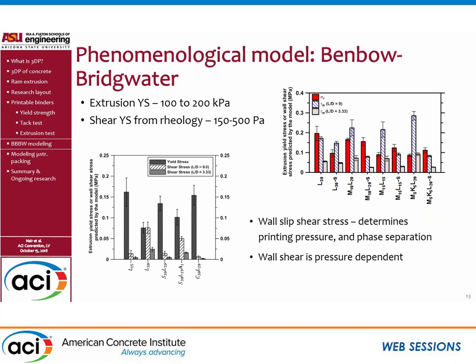To summarize the recorded values: extrusion yield stress generally varies between 100 to 200 kilopascals, while shear yield stress from rotational rheometry is between 150 to 500 pascals. These values are also shown for a few alkali-activated mixes. The wall slip shear stress determines the printing pressure and phase separation. If the stress is too high, particles will separate out unless the mix is capable of holding particles within it without separation. If the material is properly designed, even with high printing pressure, phase separation can be avoided.